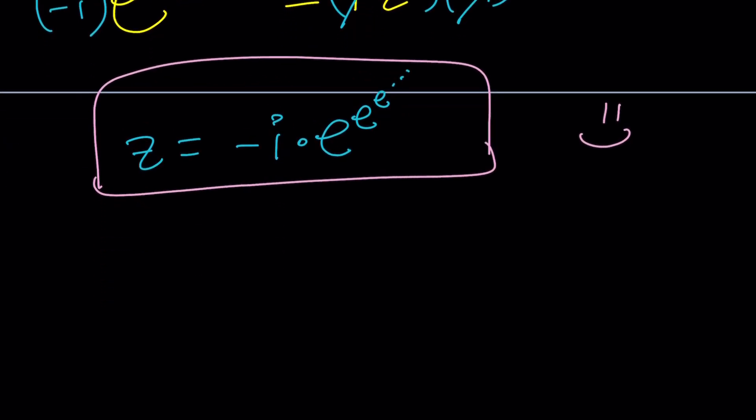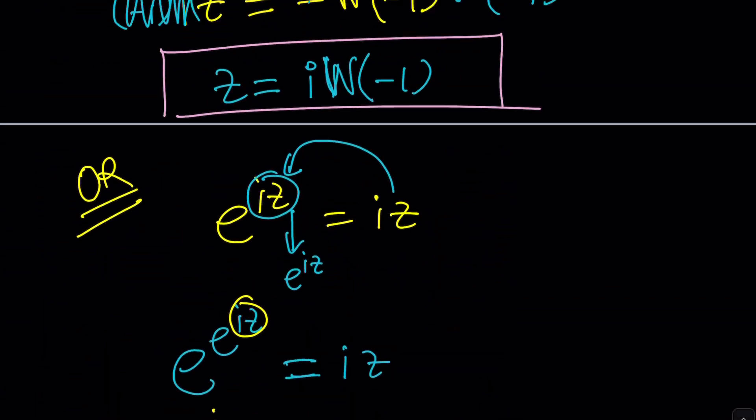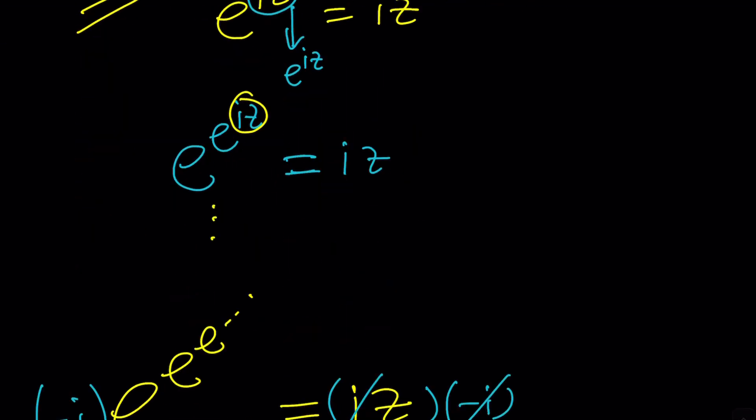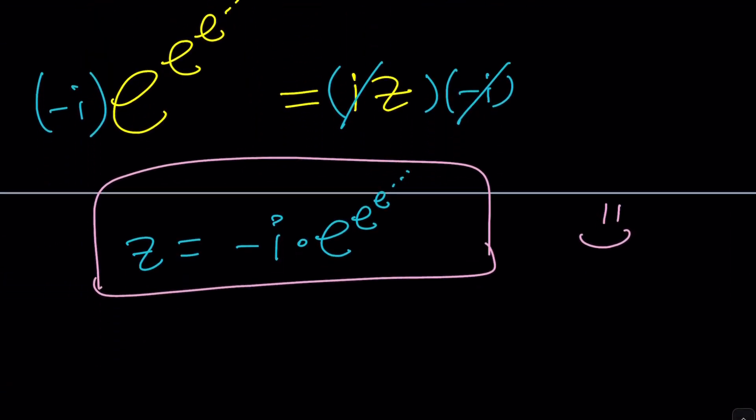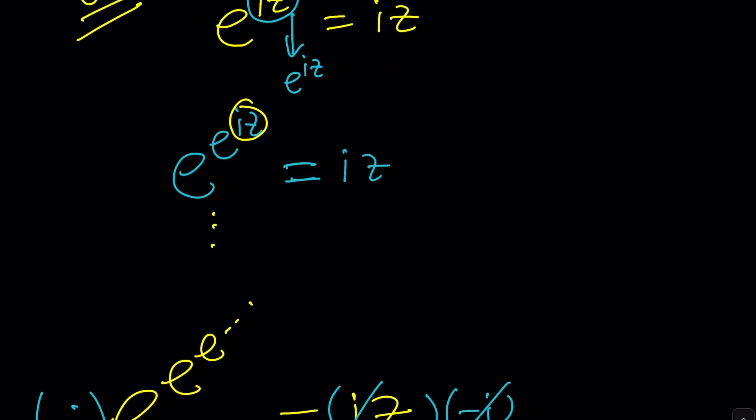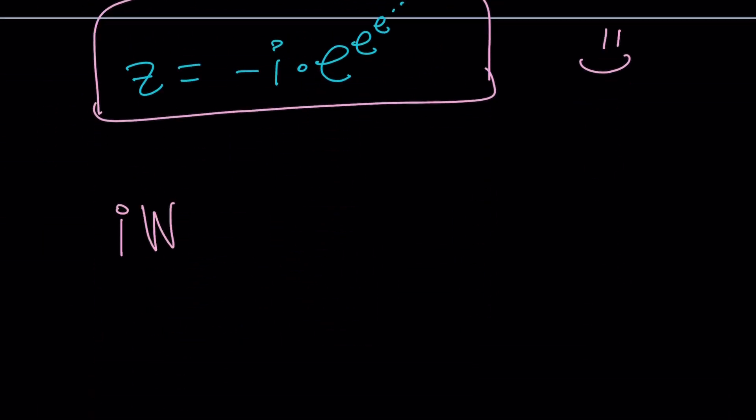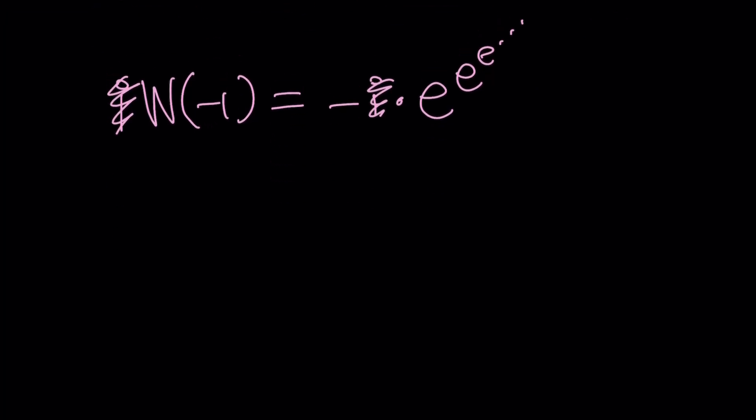But we're not done yet because we could still do something about it. Maybe write our solution from the first approach a little differently. Notice that I was able to write z as this and then z as that. So I'm getting like two different results. Let's go ahead and put those together. i times W of negative 1 is the same as negative i times e to the e to the e dot dot dot. And if you cancel out i, we get W of negative 1 as negative e to the e to the e and so on. That's not the answer, but I just wanted to share with you something.